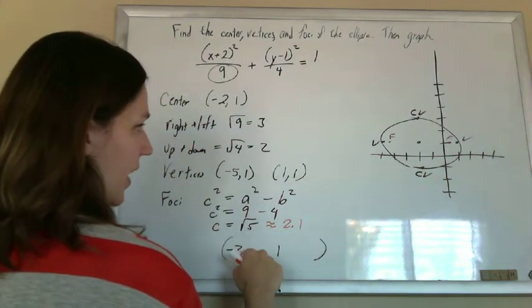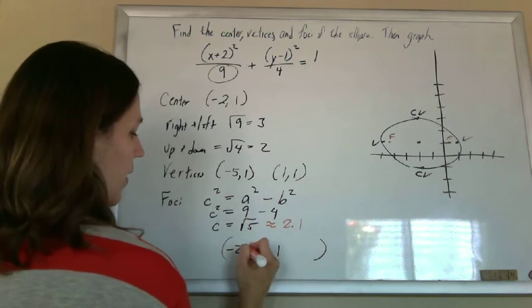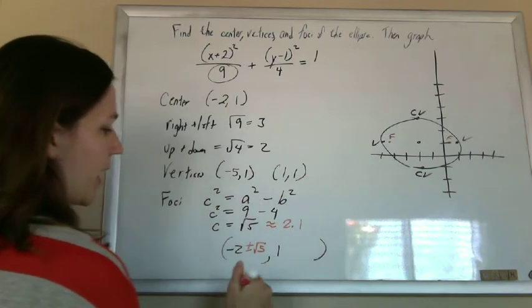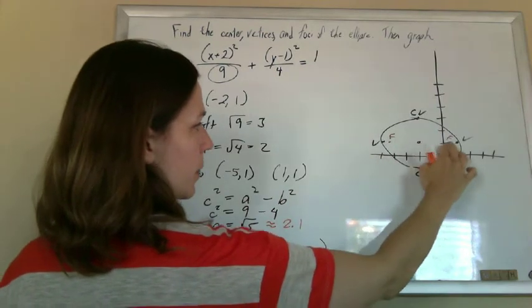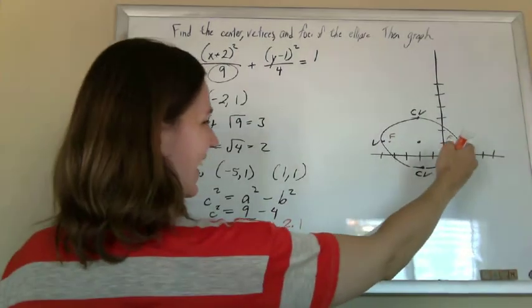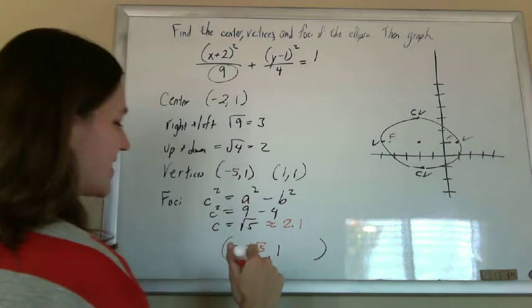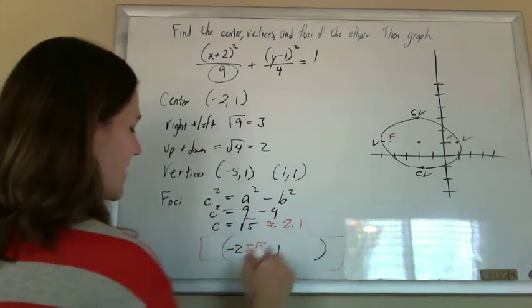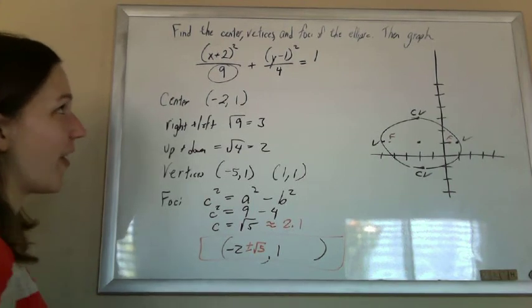And I know I went right and left to get to my vertices along the bigger axis. So I take that root 5, and since it was right and left, the x direction, I'm going to add and subtract root 5 from the x's. So there's my center, plus root 5, minus root 5, stable. And then they have the same y-coordinate as the vertices. So they're my foci, negative 2, plus or minus root 5, comma 1.